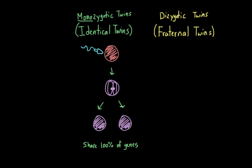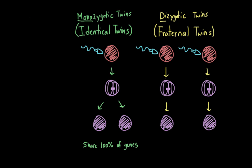Fraternal, or dizygotic twins, develop from two separate fertilized eggs — 'di' indicating two. Instead of one egg being released during a woman's cycle, two are released and fertilized by two different sperm. As a result, fraternal twins share 50% of their genes — the same genetic relatedness as regular siblings. Just like siblings, they might look alike, but they aren't going to be identical.